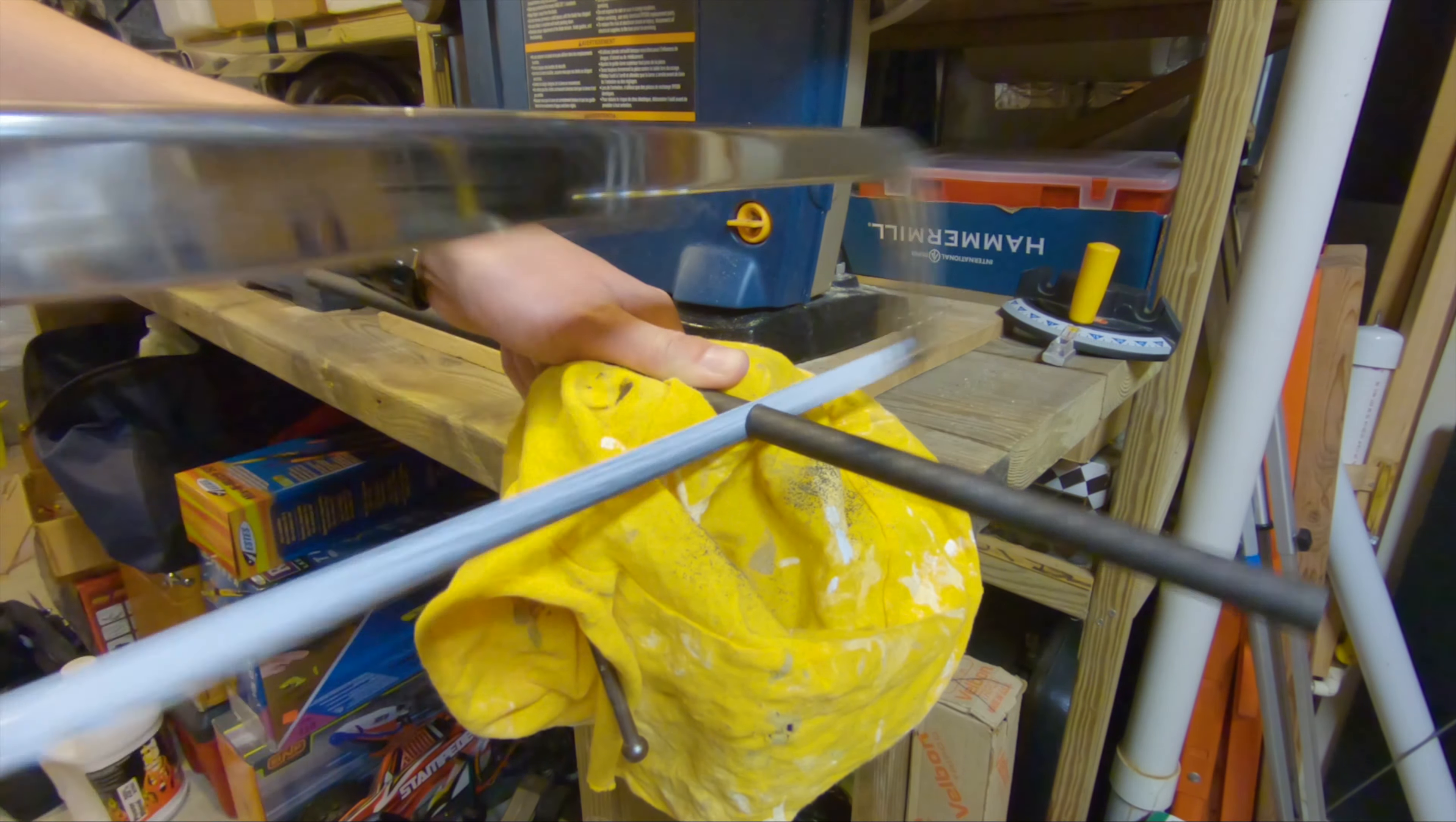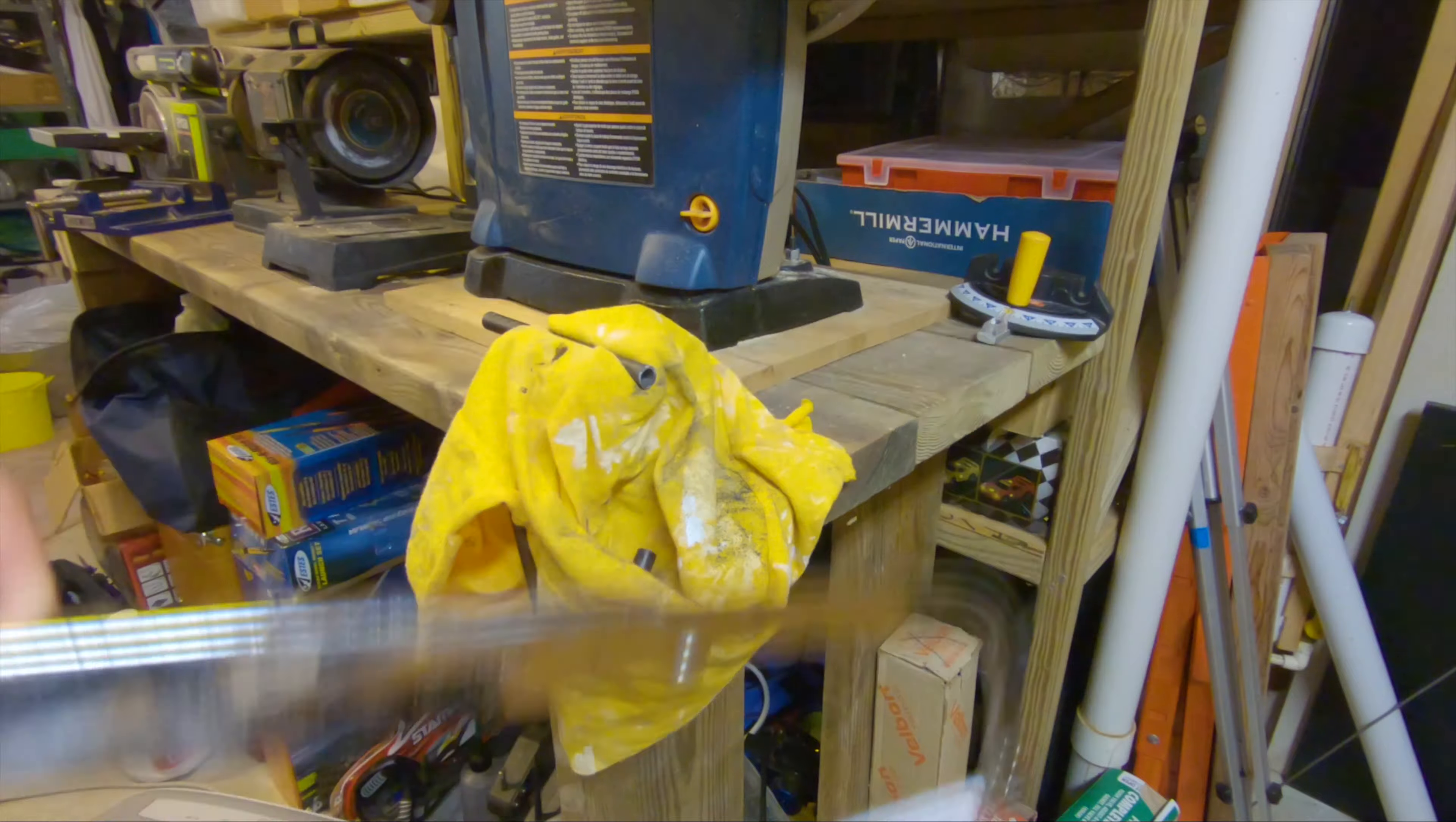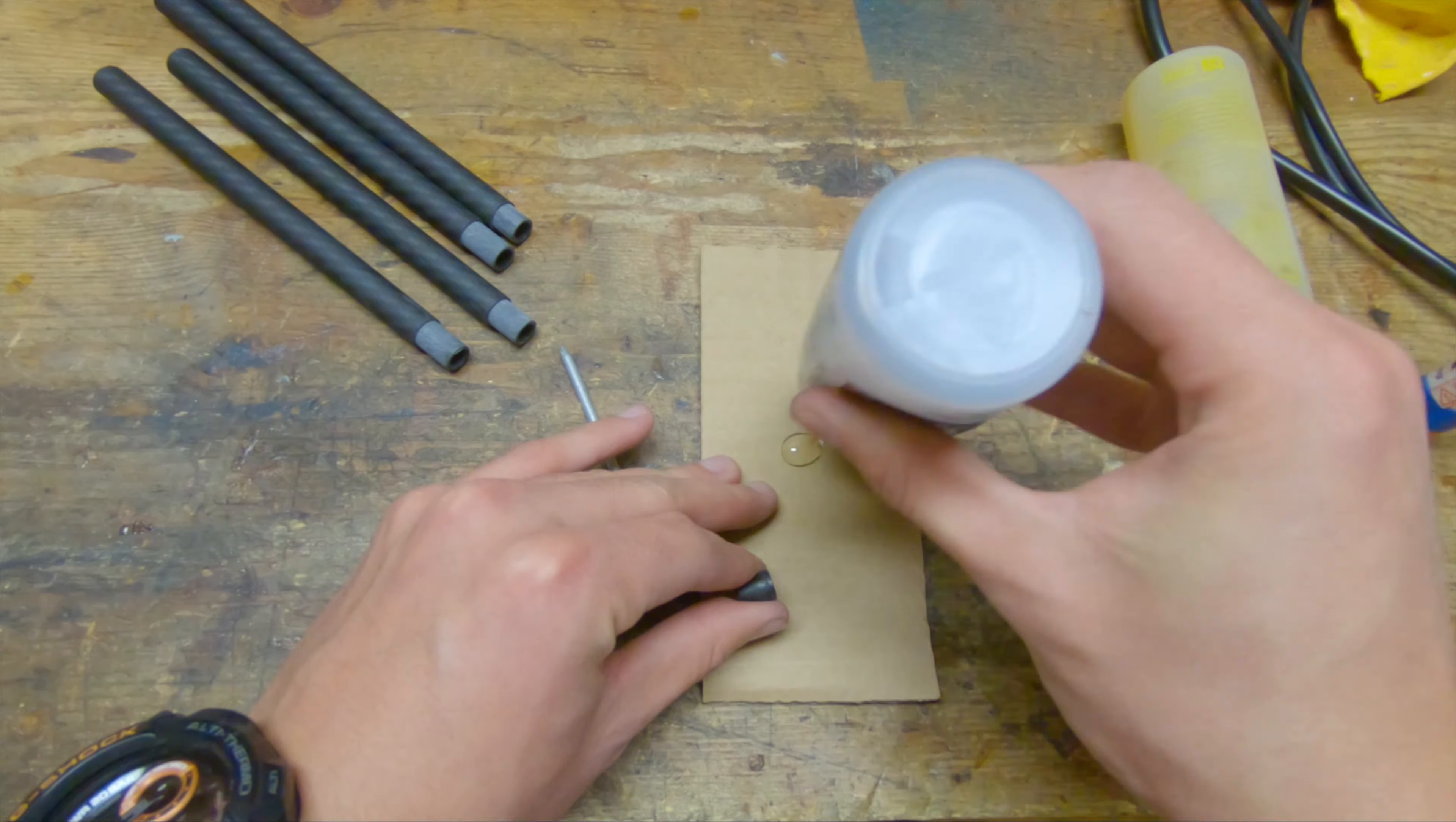Now I'm cutting all the tubes to rough length and then getting them exact on the disk sander. Then I'm cutting shorter segments that go inside the arms to strengthen them where the arm screws go through. I'm sanding those segments and then using epoxy to glue them inside the arms themselves.